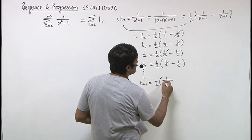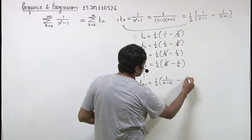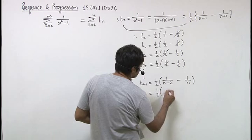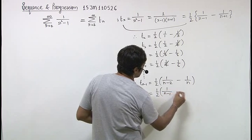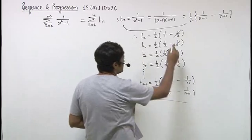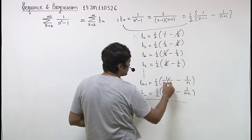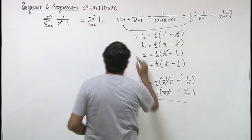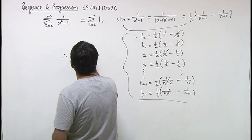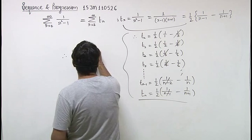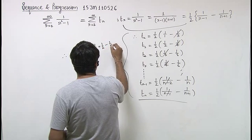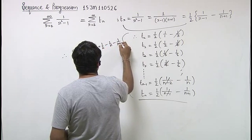So it will be 1 upon n minus 2 minus 1 upon n, and then 1 upon n minus 1 minus 1 upon n plus 1. So we can say that sum of n terms is 1 by 2 times 1 upon 1 plus 1 upon 2 minus 1 upon n minus 1 upon n plus 1.